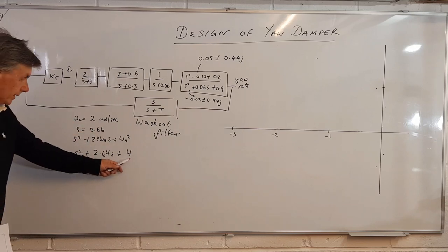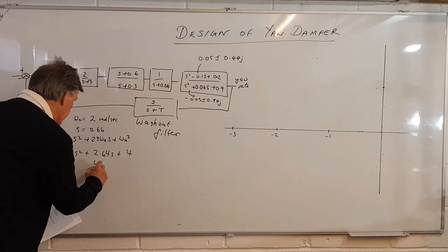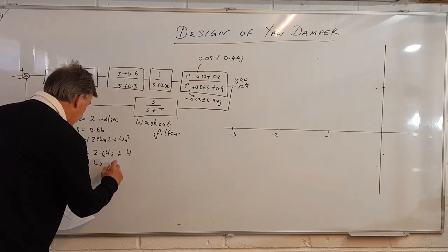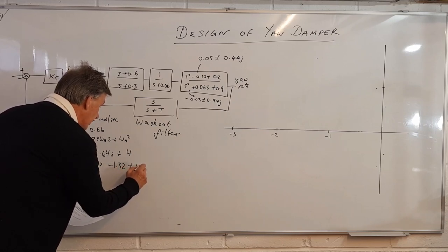So again with this one now we'll have to do another minus b plus or minus the square root of b squared minus 4ac, and this one gives us another root at minus 1.32 plus or minus 1.5j.